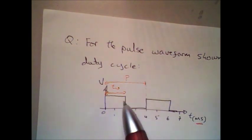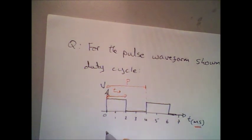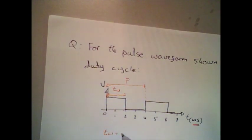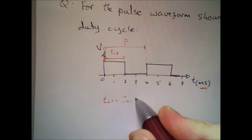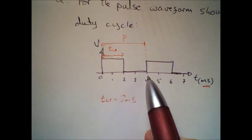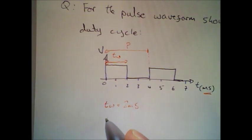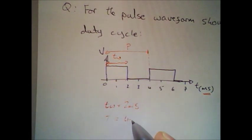Now, if we measure these times, the time width here goes from 1 to 2 milliseconds, so tw equals 2 milliseconds, and the period goes from 0 to 4, so period T equals 4 milliseconds.